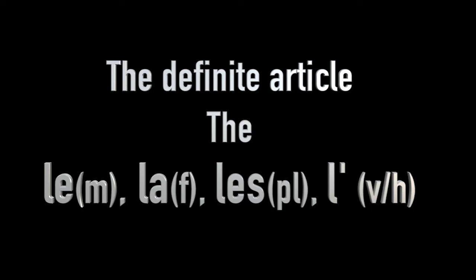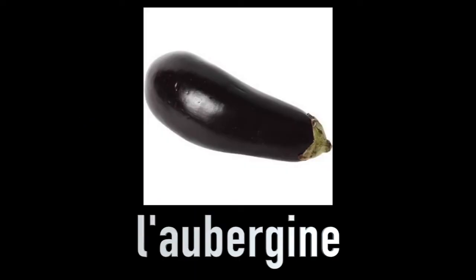So we have 'le' in front of masculine nouns for 'the', 'la' in front of feminine nouns for 'the', 'les' for any noun that is plural — like chips, crisps, potatoes, or apples — and 'l'' apostrophe in front of a noun that begins with a vowel or an H and is singular, which gives us that flowing sound, like 'l'ananas' and 'l'aubergine'.